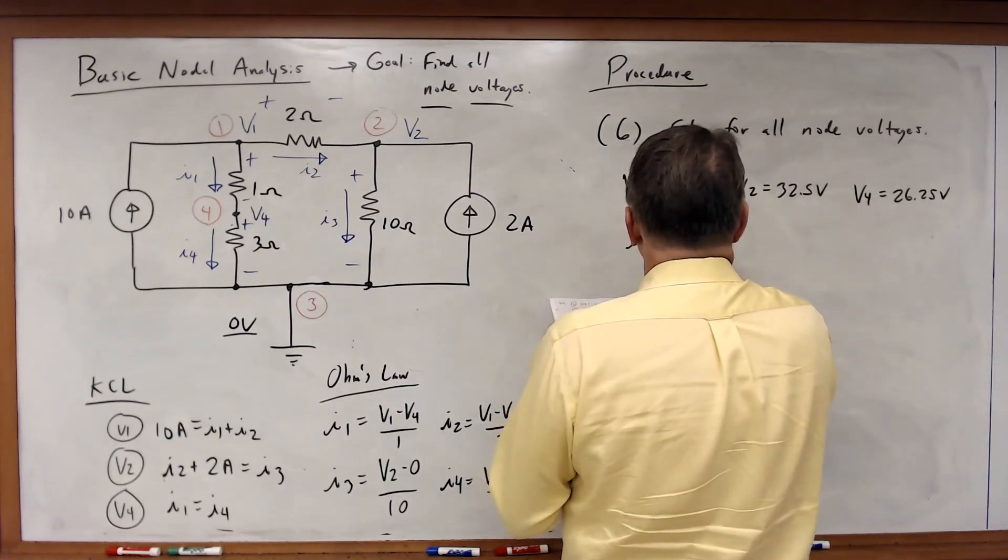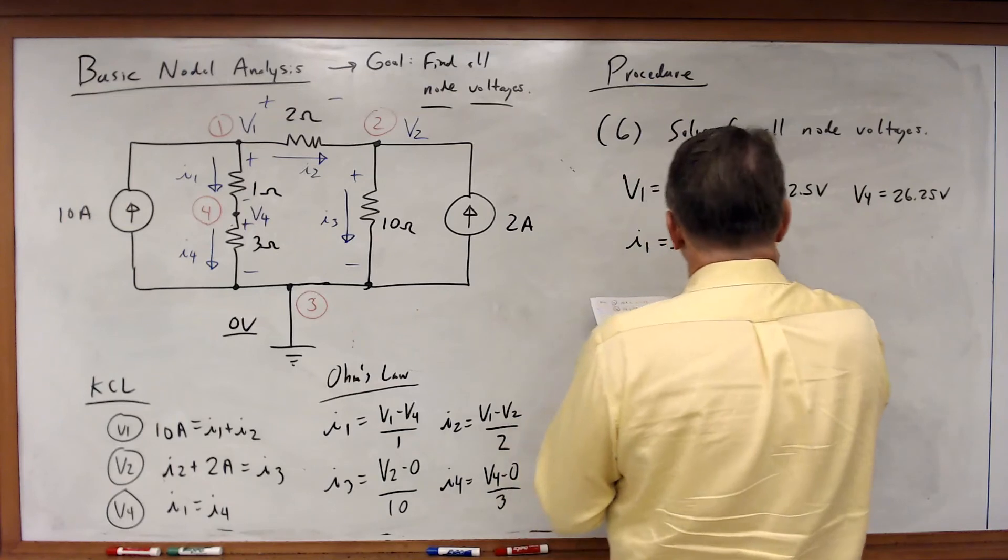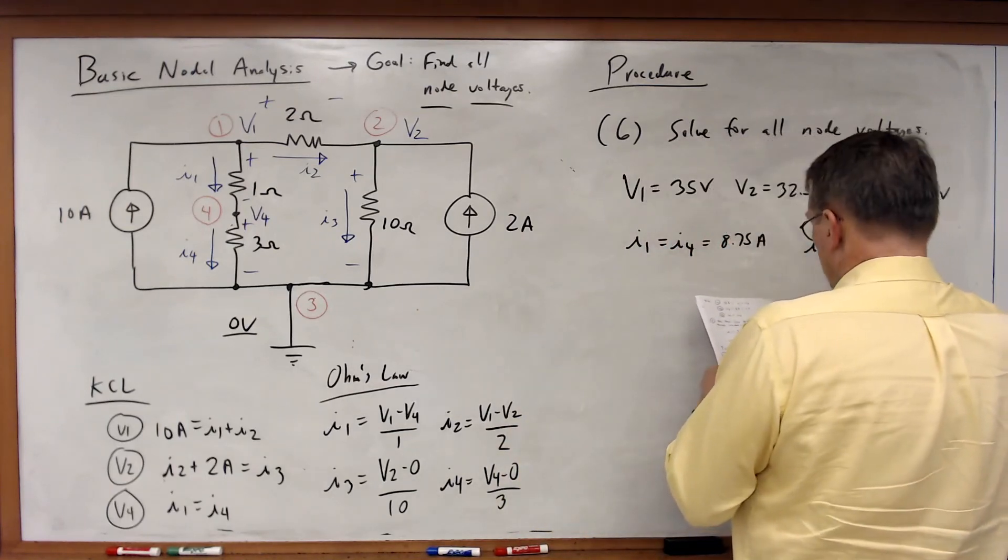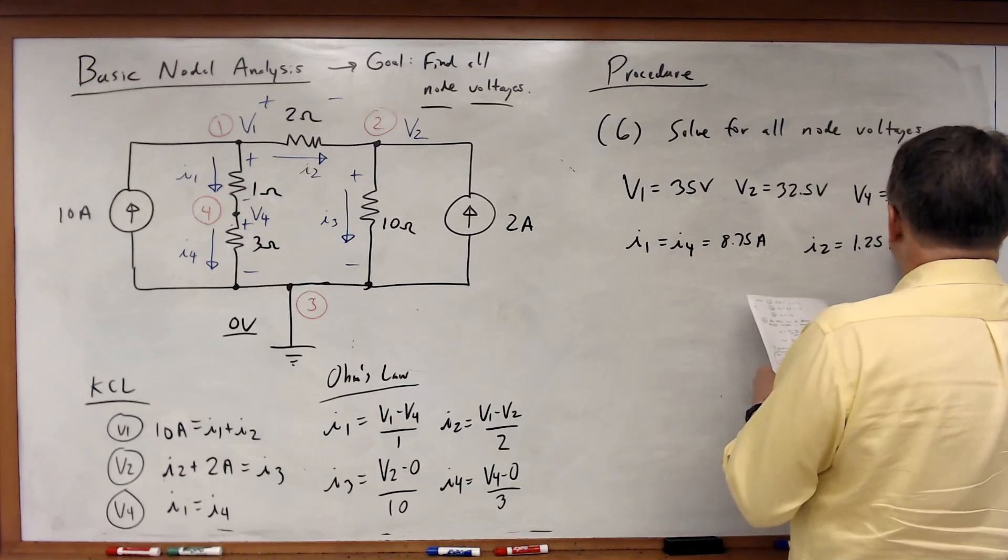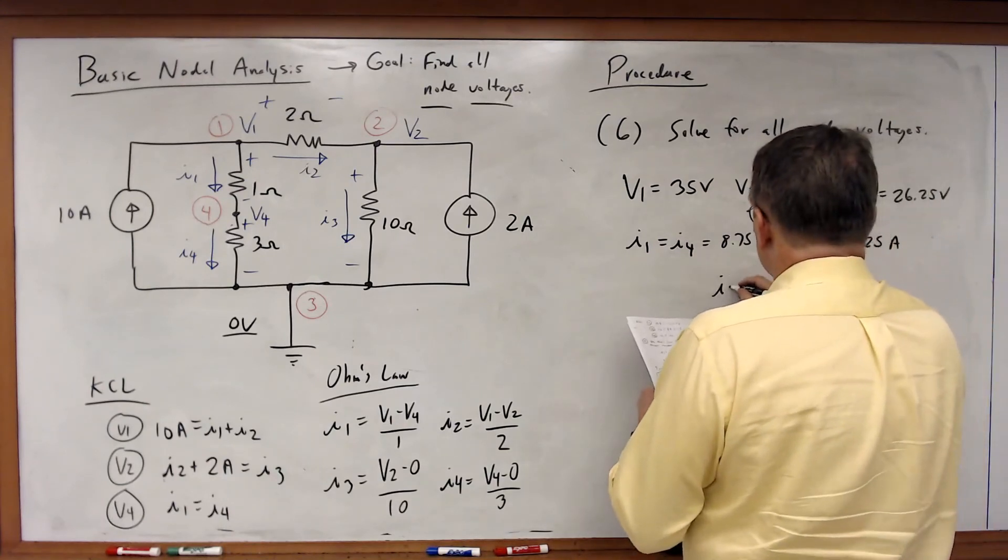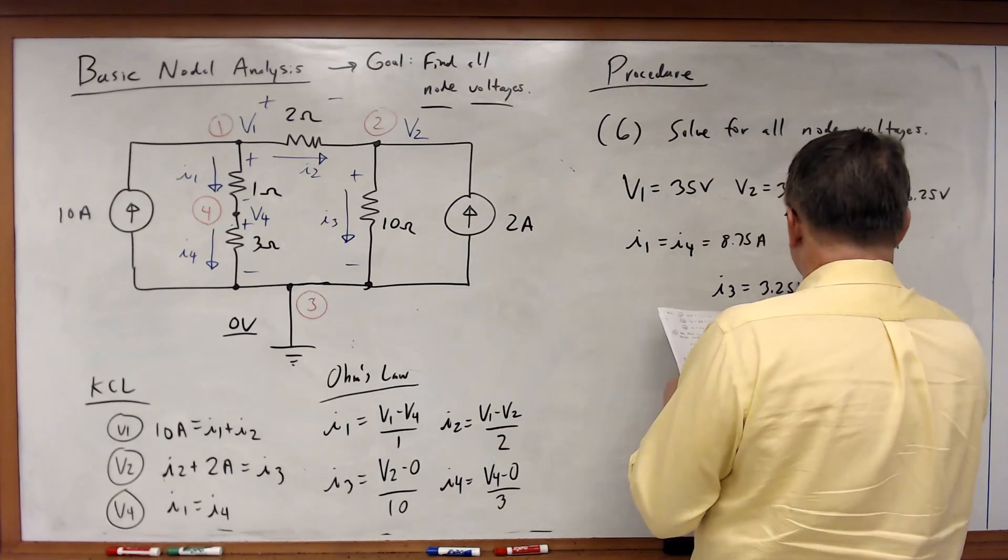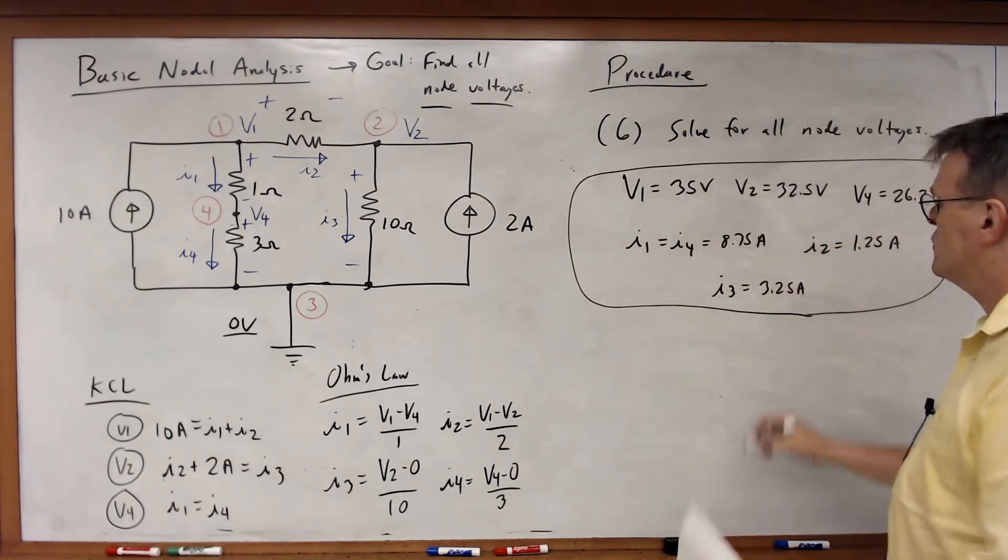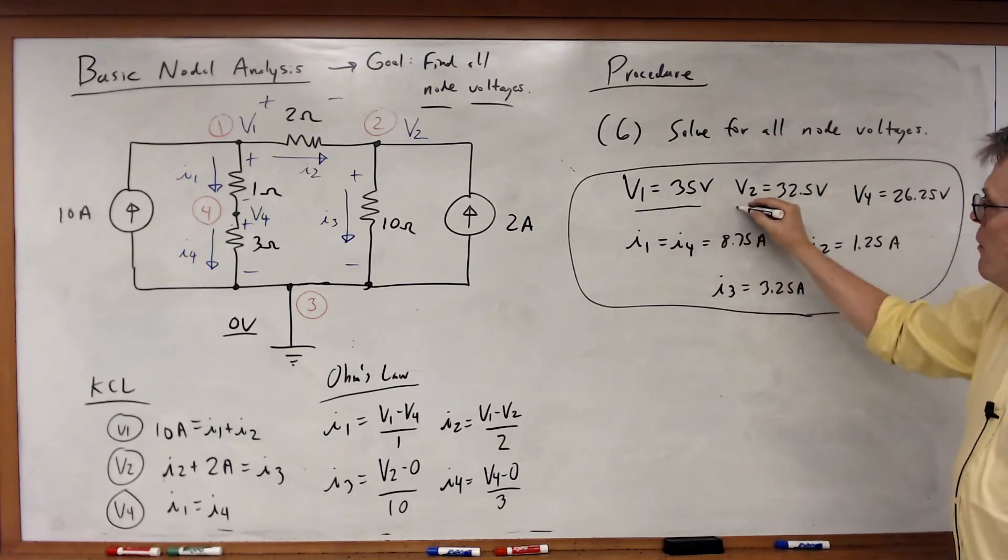I1 is equal to I4 is equal to 8.75 amps. I2 is equal to 1.25 amps. And I3 is equal to 3.25 amps. And there's your answer. Here are our node voltages.